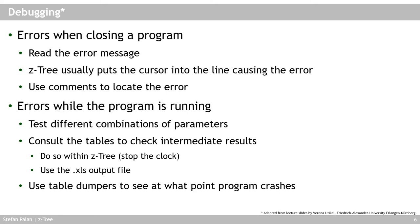If there are errors while the program is running, there can be error messages displayed in CETRI or crashes. To identify the problem, test with different parameter combinations to narrow down what's triggering the error. You can also consult the tables to check intermediate results — maybe the issue isn't a crash but just unexpected behavior. You can check tables within CETRI while the experiment is running, and sometimes it helps to stop the clock to do so.